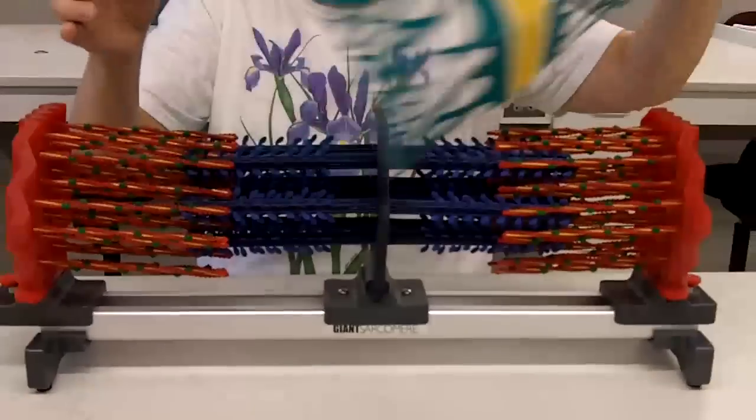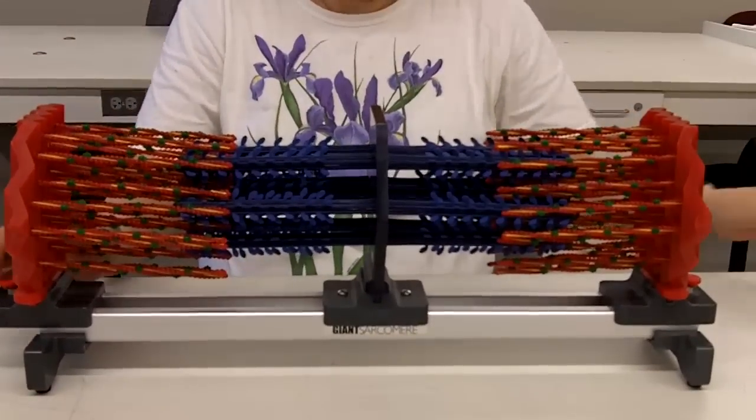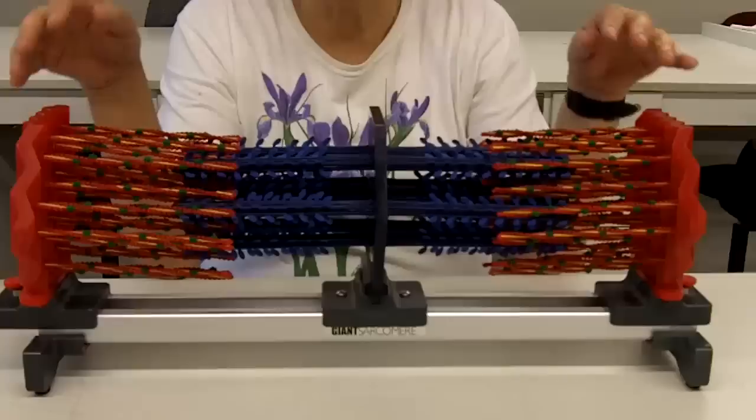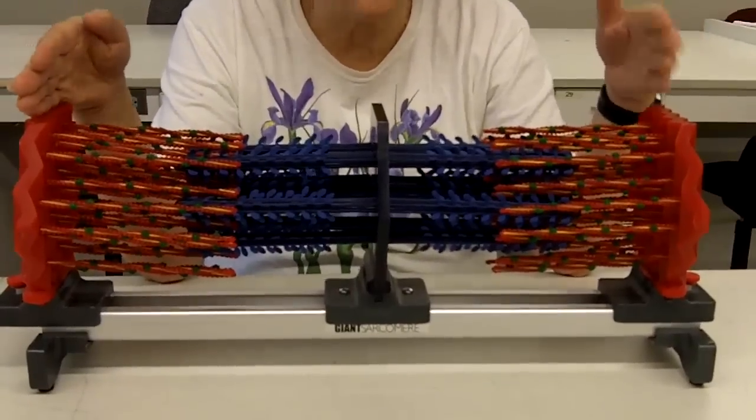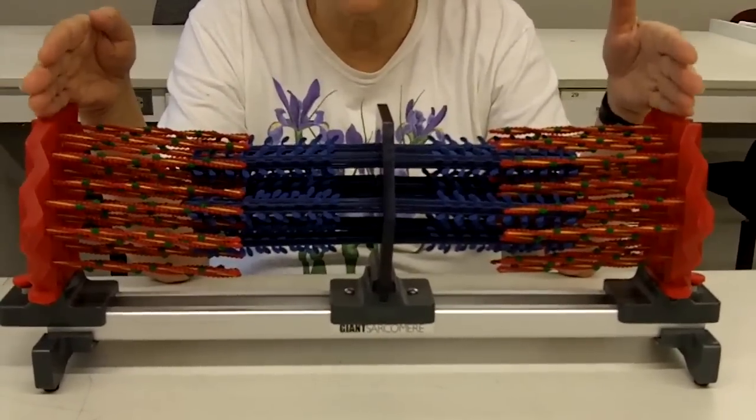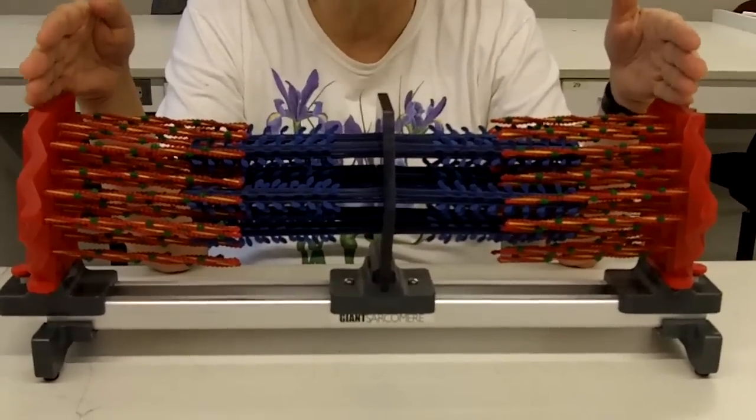Let me remove this. Now, at rest, we see a sarcomere here. We have a Z-disc here, a Z-disc here. That distance is called a sarcomere, and it repeats all along the myofibril.